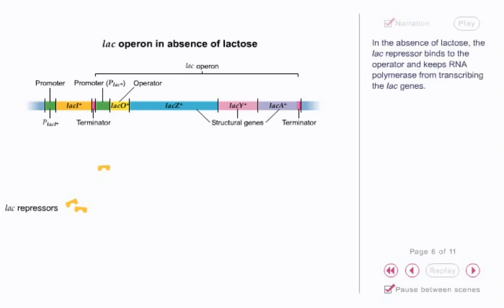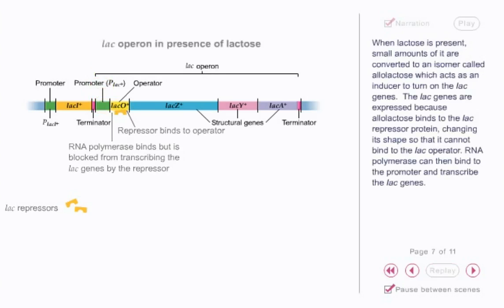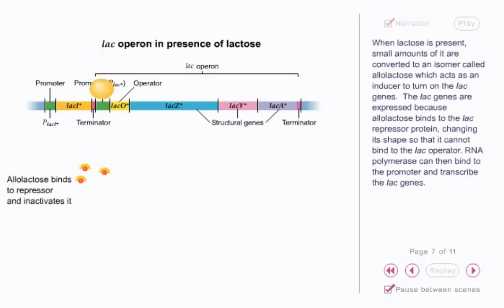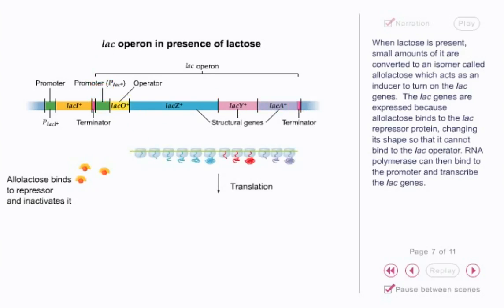In the absence of lactose, the lac repressor binds to the operator and keeps RNA polymerase from transcribing the lac genes. When lactose is present, small amounts of it are converted to an isomer called allolactose, which acts as an inducer to turn on the lac genes. The lac genes are expressed because allolactose binds to the lac repressor protein, changing its shape so that it cannot bind to the lac operator. RNA polymerase can then bind to the promoter and transcribe the lac genes.